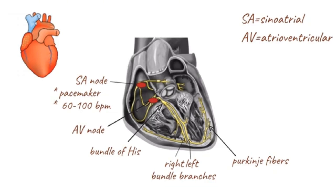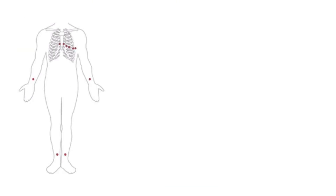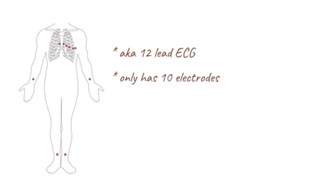During ECG recording, the correct placement of the electrodes is important, as misplacement can result in misinterpretation and incorrect diagnosis. The common ECG is also somewhat confusingly called a 12-lead ECG even though it only has 10 electrodes.